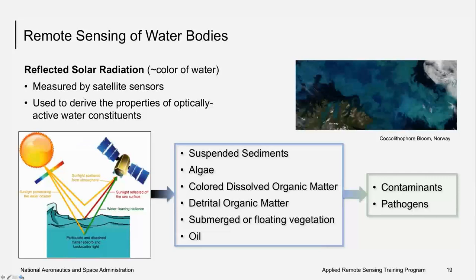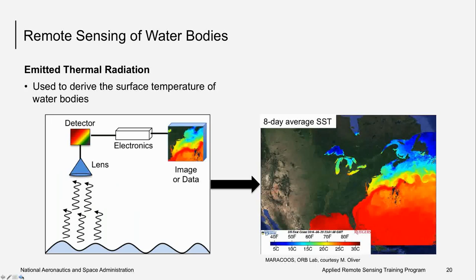Sea surface temperature can be observed using sensors that detect emitted thermal radiation. Knowing sea surface temperature gives insight into the ocean heat budget, ocean current patterns and rates, and the rate of photosynthesis and primary productivity models. The image shown here is an eight-day average of sea surface temperature along the east coast of the United States. The deep red color along Florida northward to North Carolina is the Gulf Stream. After it detaches from the continent, turbulent flow encourages the formation of eddies, visible on the eastern part of this image.